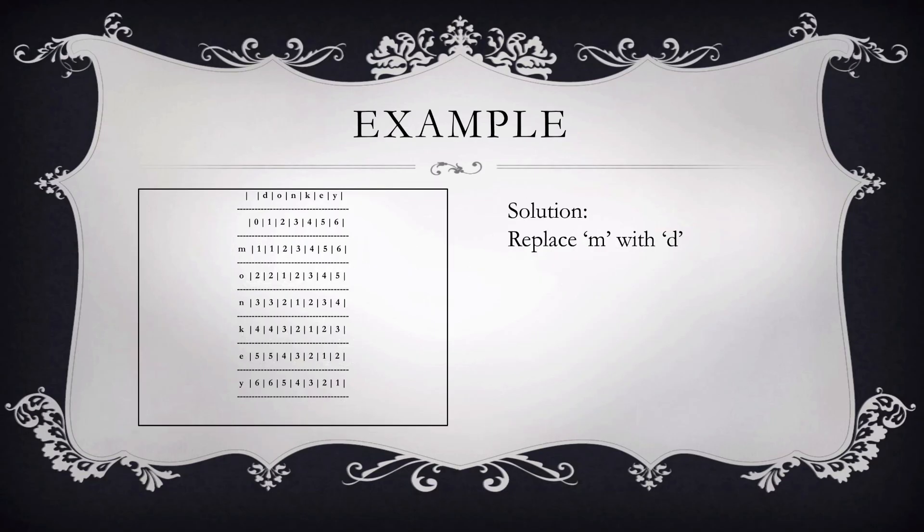See another example in which the word monkey should be replaced with donkey. When we do the same approach with matrix representation and replace with all known characters using dynamic programming, we get one as the minimum edit distance. We can clearly see that m is replaced with d to get the word donkey from monkey.